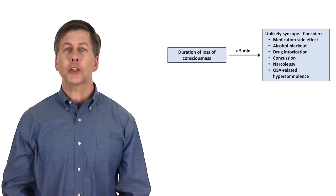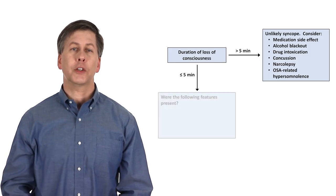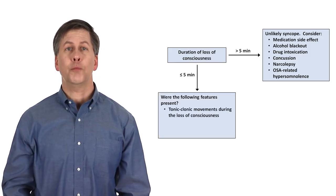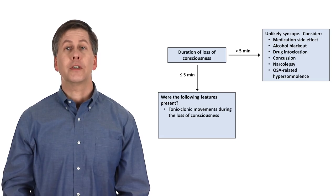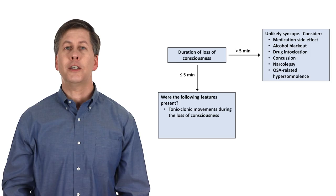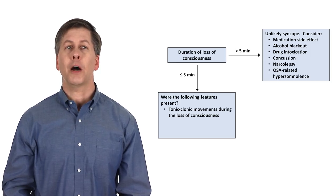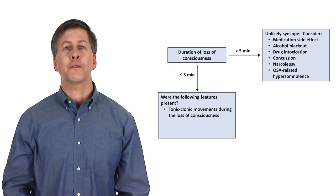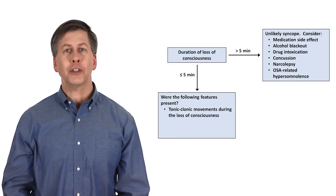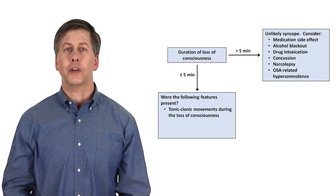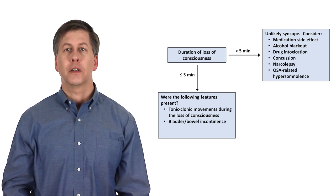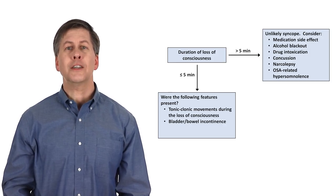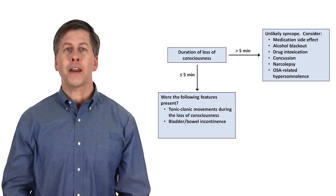Once you determine that the loss of consciousness was transient, then you must differentiate syncope from seizure. There are three main relevant questions to do this. Did the patient have tonic-clonic movements during the loss of consciousness? This is not always as straightforward as it might seem since patients with syncope can experience non-epileptic myoclonic jerks that can look rhythmic and it's very common for bystanders, even healthcare professionals, to mistake such movements for seizure activity. Second, was there bladder or bowel incontinence? Bladder incontinence is common but not universal with seizure but can also uncommonly happen with syncope. Bowel incontinence is a little bit less common with a seizure but does not happen with syncope.